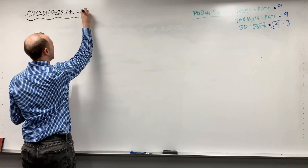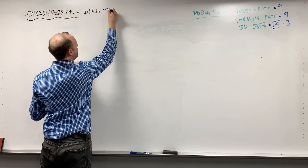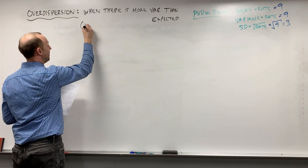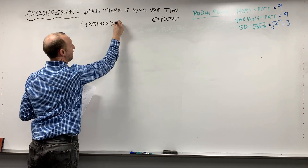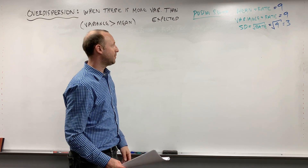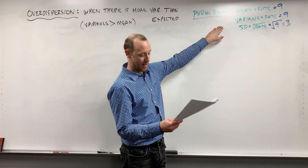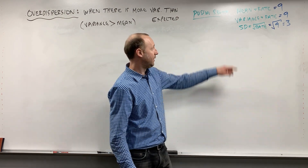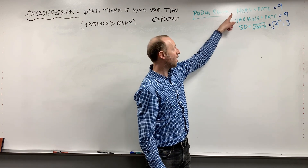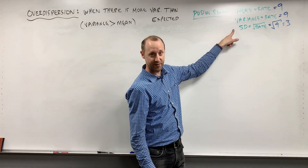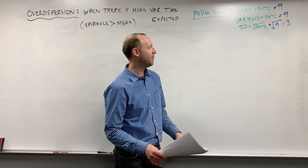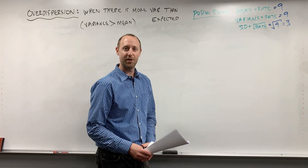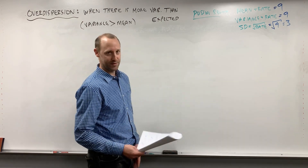So overdispersion is when there is more variability than expected — stated another way, it's when the variance is greater than the mean. For example, if for a set of people with the same X values our model estimates 9 visits per year with a standard deviation of 3, overdispersion would be if the actual standard deviation for the number of visits was much larger than 3. 'Over' means more, and 'dispersion' is another word for variance or variability — so overdispersion means more variability than expected.